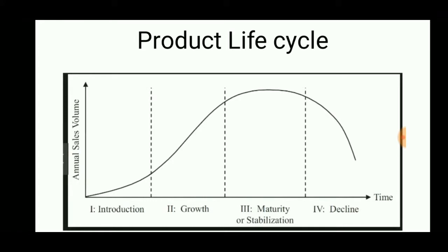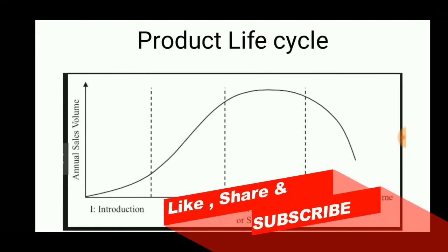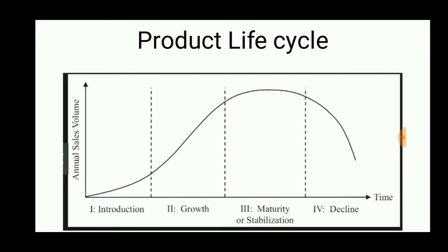Welcome to Engineering Study Materials. Today we are going to discuss the product lifecycle. When a product comes to market, it undergoes four stages: the introduction stage, growth stage, maturity or stabilization stage, and decline stage. In the introduction stage, sales volume is very less. In the growth stage, sales volume is increasing. In the maturity stage, it performs a consistent stabilizing performance, and in the decline stage, the annual sales volume decreases to zero.